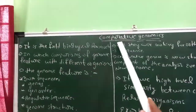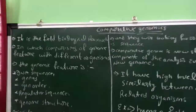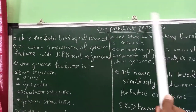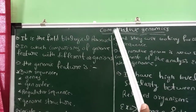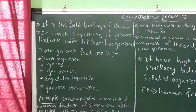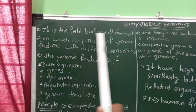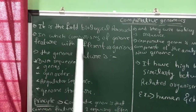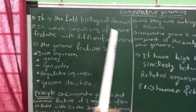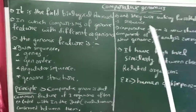Good afternoon. Today we will be seeing the topic of comparative genomics. What is the meaning of comparative genomics? The comparison between two organisms within genes is called comparative genomics. It is the field of biological research in which the comparison of gene features with different organisms is studied.